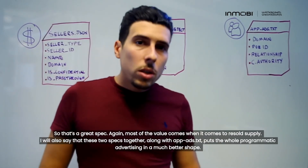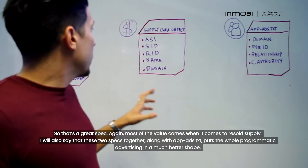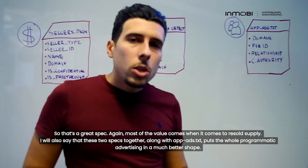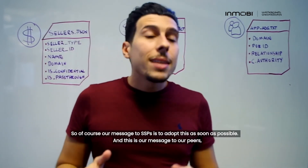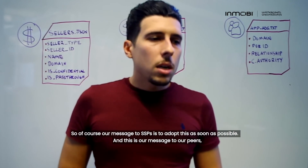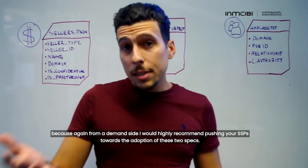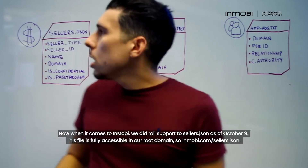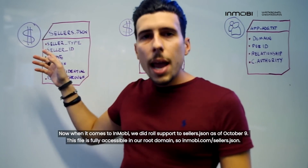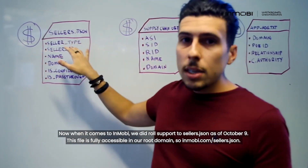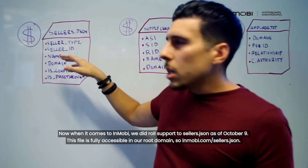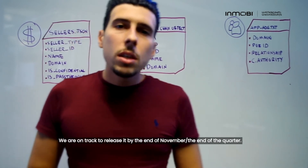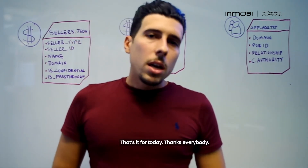Most of the value of supply chain object comes when it concerns resold supply. These two specs together, along with app-ads.txt, put the whole programmatic advertising ecosystem in a much better shape. Our message as an SSP is to adopt these specs as soon as possible, and from a demand side I would highly recommend pushing your SSPs towards adoption. When it comes to InMobi, we rolled out support for sellers.json as of October 9th — the file is fully accessible at immobi.com/sellers.json, please go visit. Supply chain object is in our roadmap and we are on track to release it by end of November. That's it for today, thanks everybody.